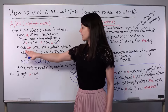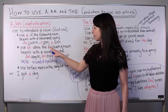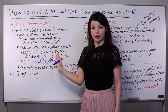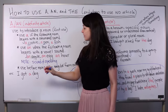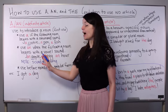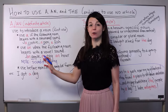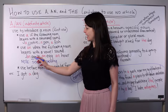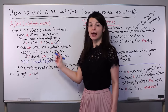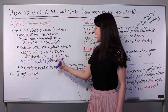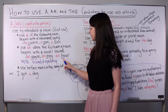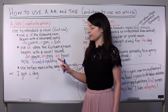We use an when the following noun begins with a vowel sound. Some examples of this are: an apple — here we have 'a' as our vowel sound, so we use an. An apple. An egg — here the 'e' sound. And then, an hour — here this begins with a vowel sound.